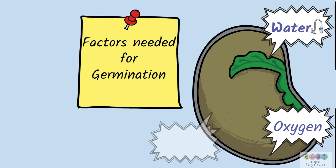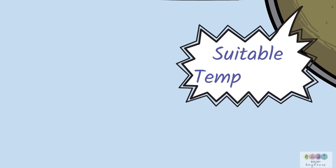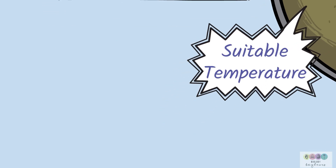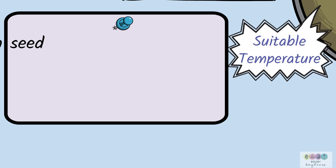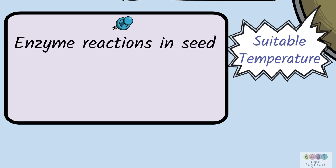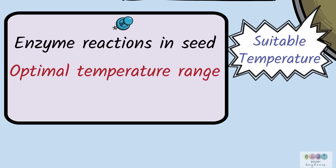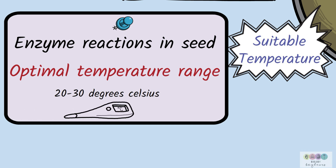The final essential factor is a suitable temperature. The reason why a suitable temperature is needed is all to do with those enzyme reactions in the seed. Enzyme-controlled reactions have an optimal temperature range — in plants it's generally between 20 and 30 degrees Celsius — so if you don't have the right temperature, the reactions will not happen fast enough.